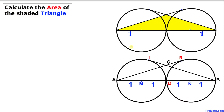Welcome to PreMath. In this video tutorial we have two identical circles with radius 1 and they are tangent to each other, as you can see in this figure. We are asked to calculate the area of this shaded triangle ABC.